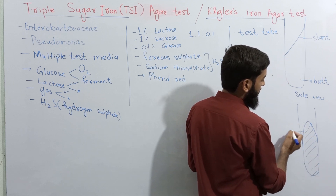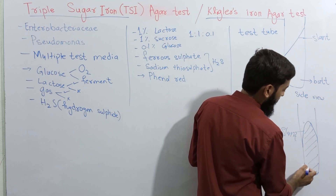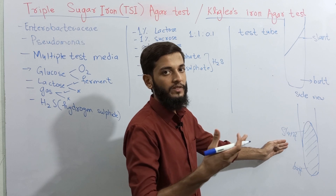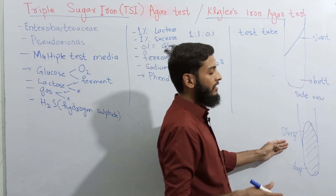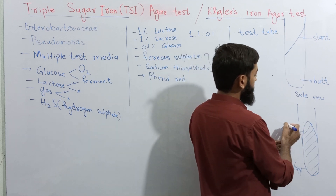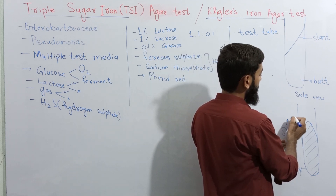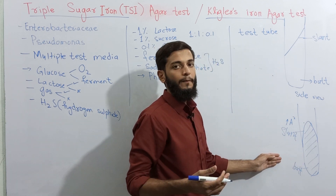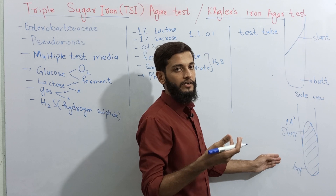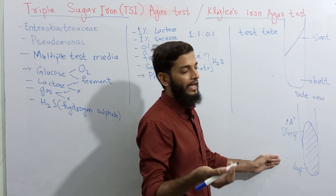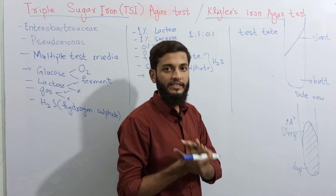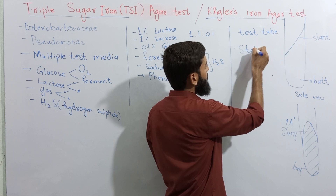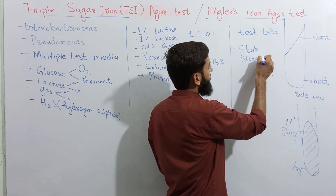So this is the slant, whereas this is the butt. The purpose of the slant in this test tube is that it provides more surface area for the test. These test tubes are inoculated with the help of an inoculating needle by a technique known as the stab-streak technique.